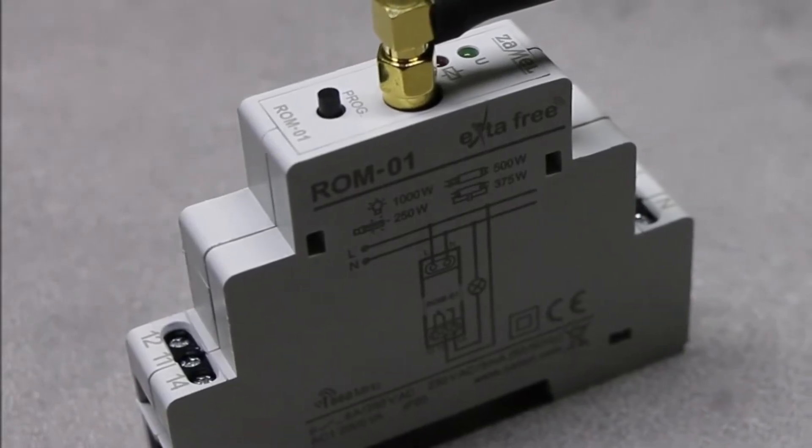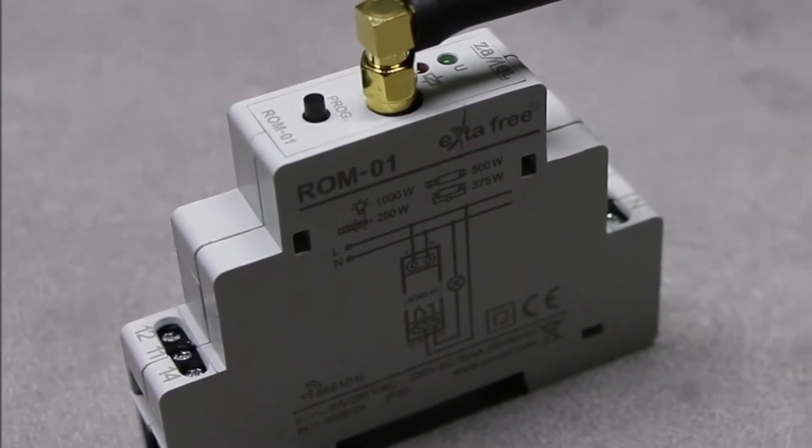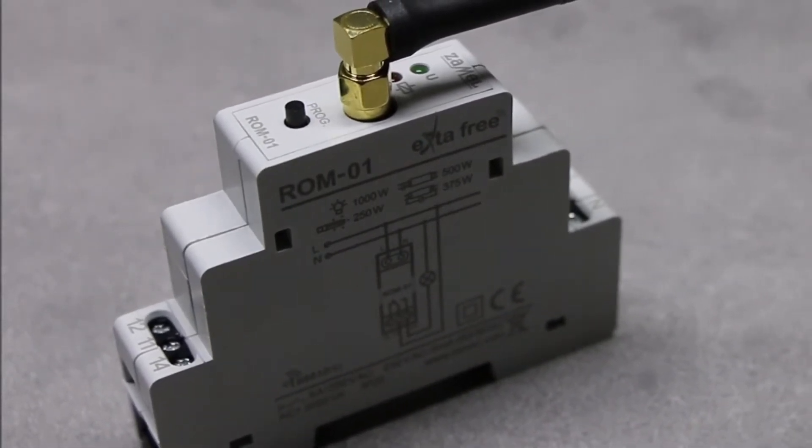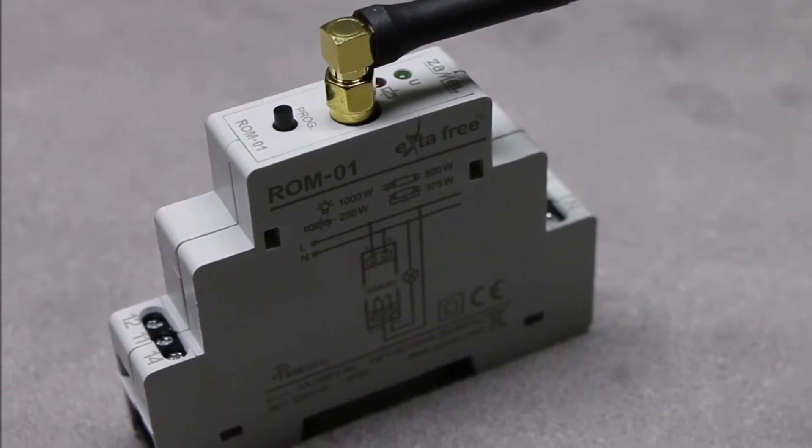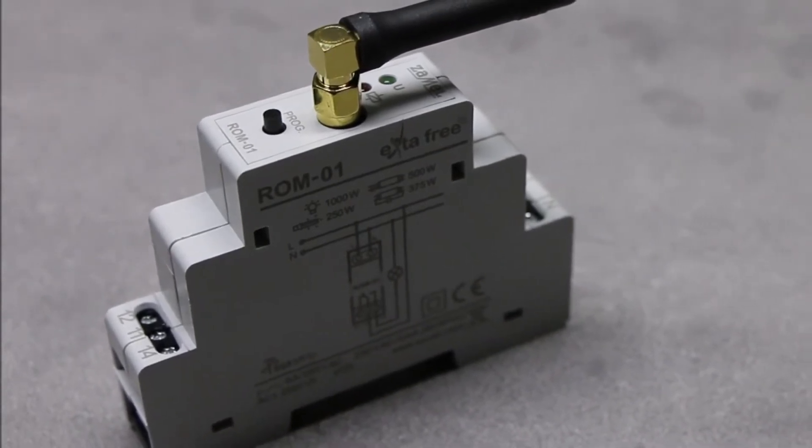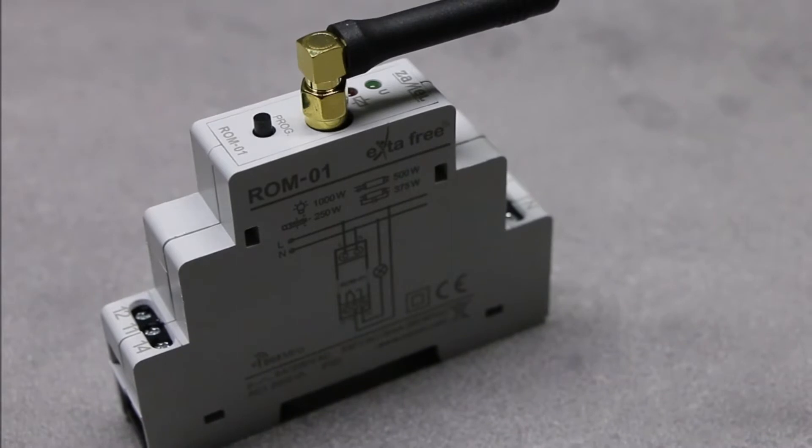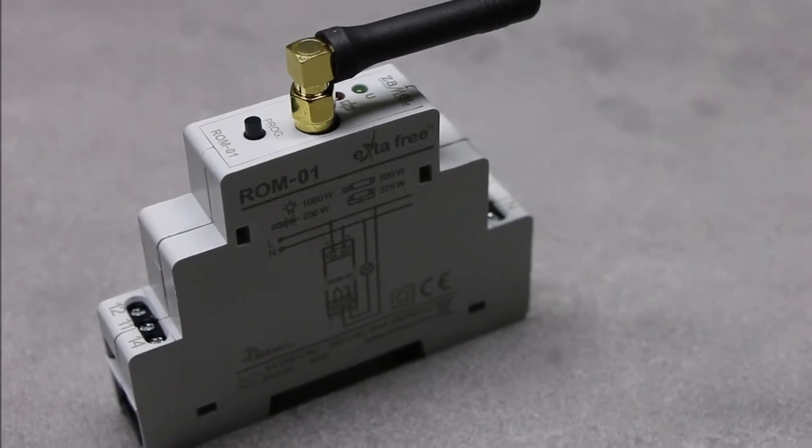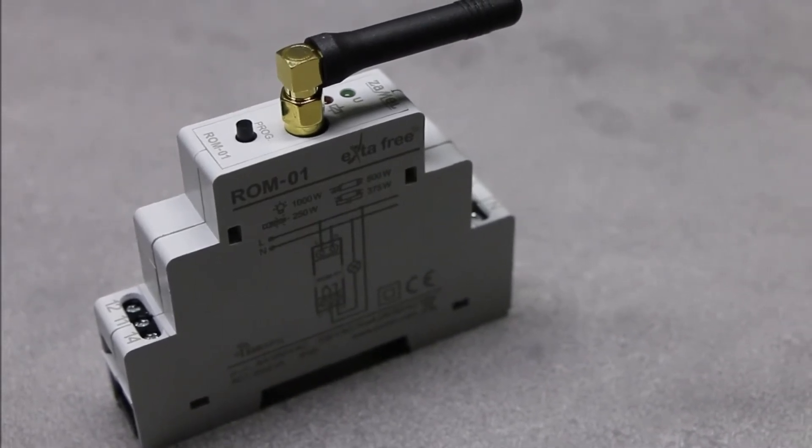ROM01 is the modular receiver of the wireless control system ExtraFree. It can be used for remote control of any light sources or other devices such as solenoid valves, circulation pumps, ventilation systems, electric heaters, bells, etc.